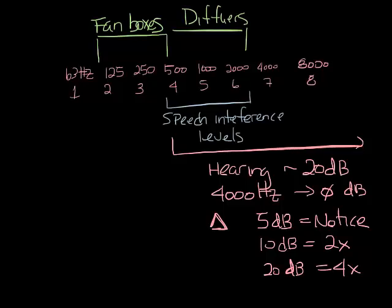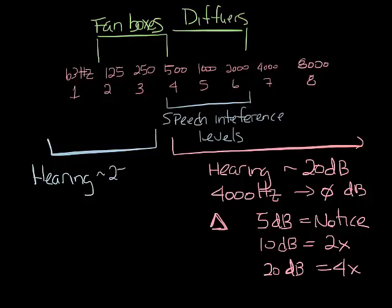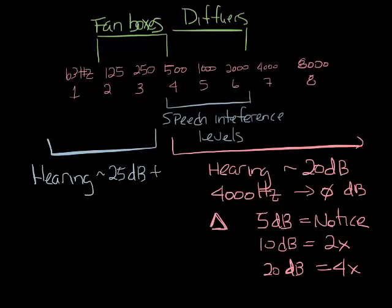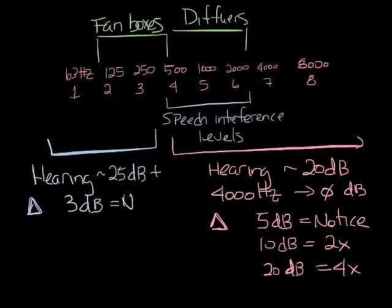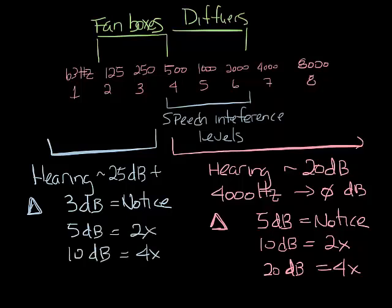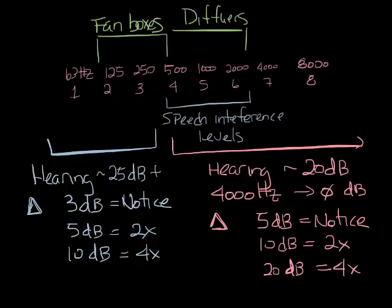So now let's look at the low frequencies. In the low frequencies, that's third band and below, the threshold for hearing is 25 dB or above. In the first band, the sound would need to be almost 50 dB before we could even hear it. In these frequencies, it takes about 3 dB to notice the difference in sound. A 5 dB increase would be twice as loud, and 10 dB would be four times as loud. So going back to our 50 dB example, in the second band, 55 dB would be twice as loud as the 50, and 60 would be four times as loud.